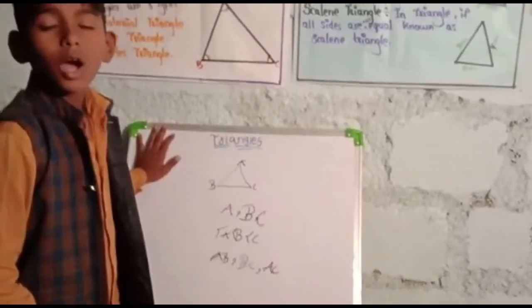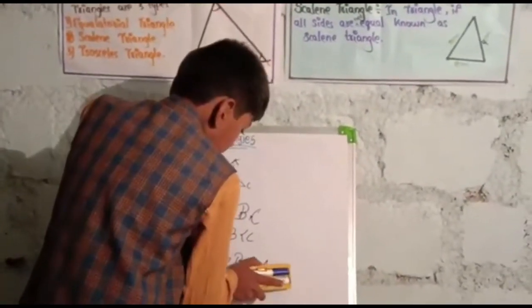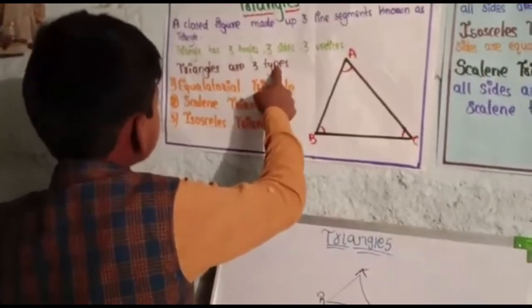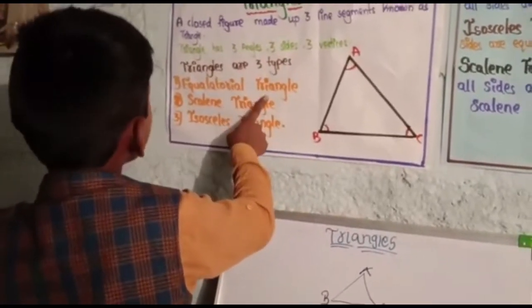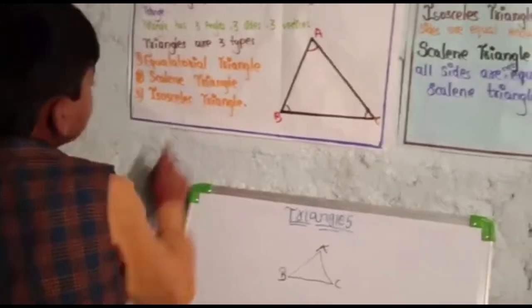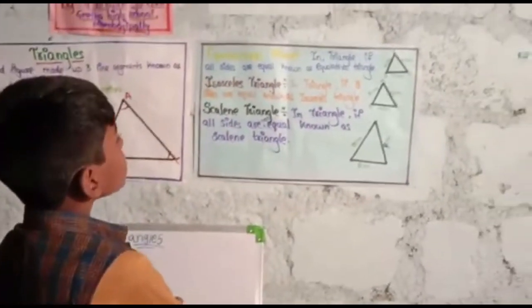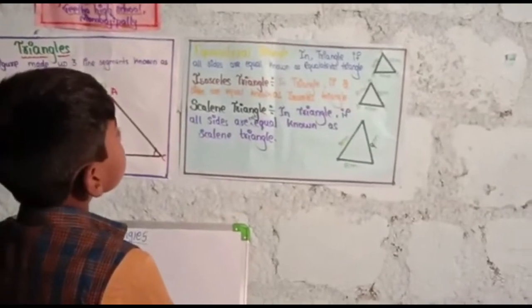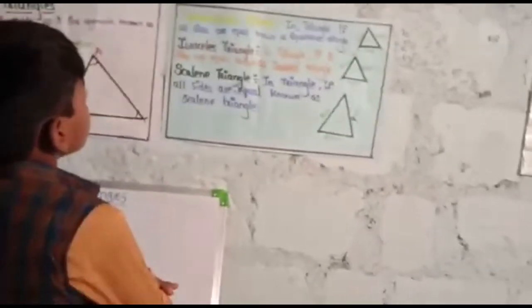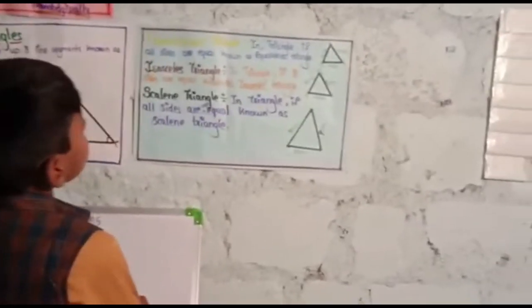Now types of triangle. Triangle means three types. Equilateral triangle. If all sides are equal, we call it equilateral triangle.